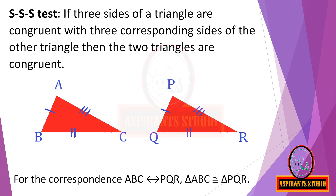Triangle ABC is congruent to triangle PQR because of the SSS test. The three sides of the first triangle — side AB, side BC, and side AC — are respectively congruent to side PQ, side QR, and side PR. Side AB is congruent to side PQ, side BC is congruent to side QR, and side AC is congruent to side PR. If three sides of the triangle are congruent with three corresponding sides of the other triangle, then the two triangles are congruent. The remaining congruent parts are: angle A congruent to angle P, angle B congruent to angle Q, and angle C congruent to angle R.